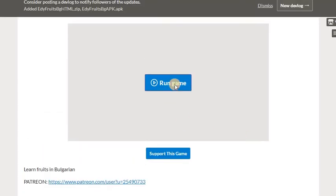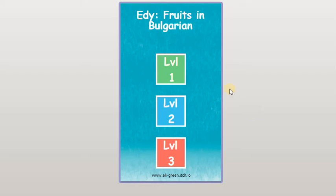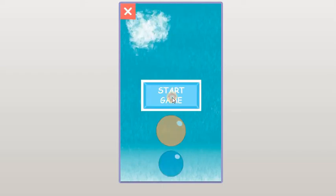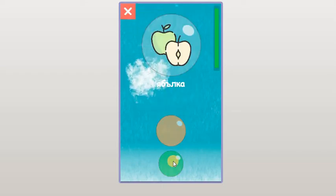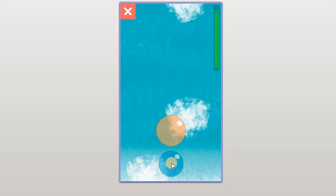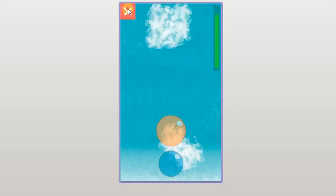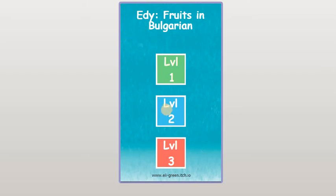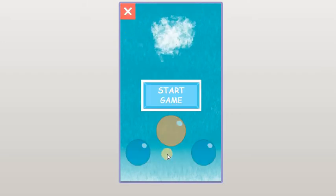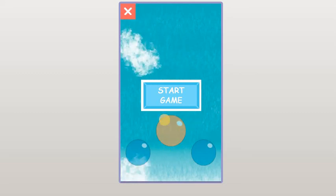Let's play. That's the game — nothing new happens except of course the Bulgarian language this time. As you can see, Bulgarian is a little bit similar to Russian because they are from the same linguistic family.